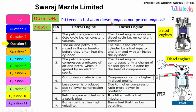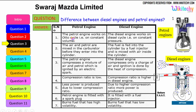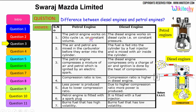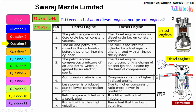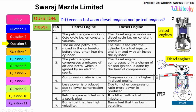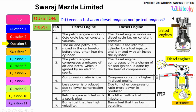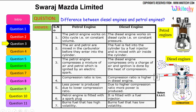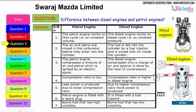Let us see the difference between the diesel engine and the petrol engine. The petrol engine works on the Otto cycle, therefore on constant volume, whereas the diesel engine works on the diesel cycle at constant pressure. The air and petrol are mixed in the carburetor before entering the cylinder, whereas in a diesel engine, fuel is fed into the cylinder by a fuel injector and is mixed with air inside the cylinder.